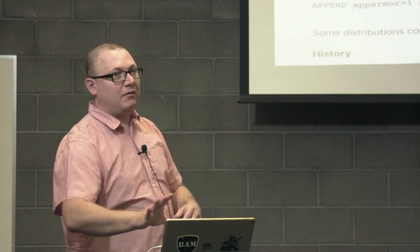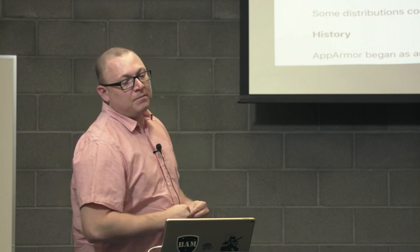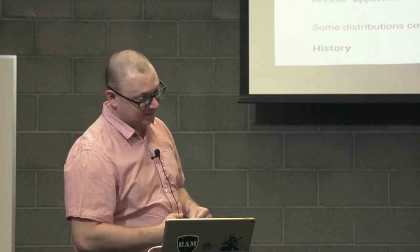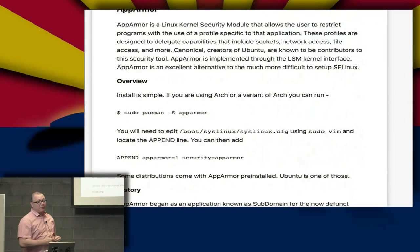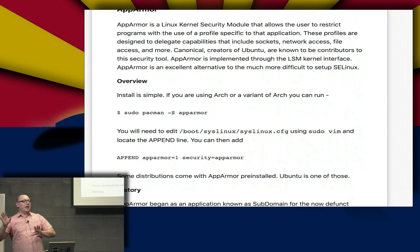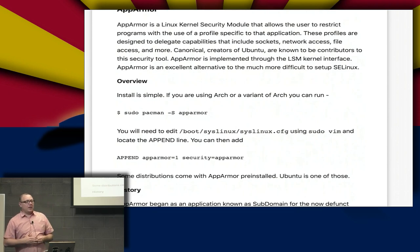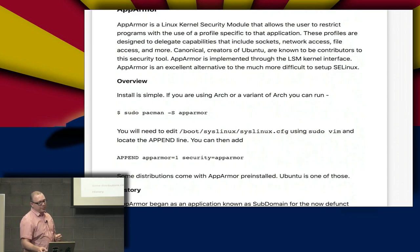AppArmor is a Linux kernel security module that allows the user to restrict programs with the use of a profile specific to that application. We write a profile, we say what an application can do and what users can access it. Whenever that application fires off, only those specific authorized items happen. These profiles are designed to delegate capabilities including sockets, network access, file access, and more. Canonical, the creators of Ubuntu, are known to be contributors to this security tool.